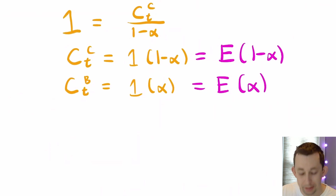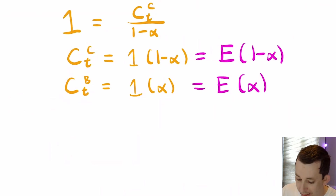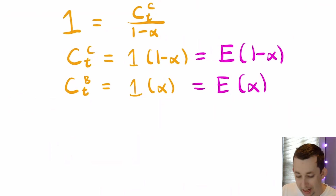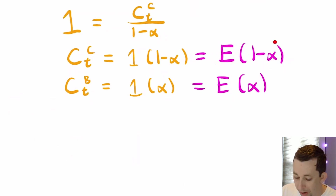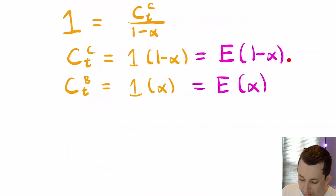After doing the algebra, I get that one — the total endowment in any given period — equals Chuckles' consumption in period t divided by one minus alpha. Rearranging, I get c_t^C equals one minus alpha times the endowment, and through that I get c_t^B. The endowment is constant every period, so in every period Chuckles gets his portion of the endowment multiplied by how much Dave cares about Chuckles. Dave simply allocates coconuts to Bill and Chuckles based on how much he likes each of them, represented by the alpha parameter.